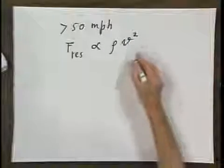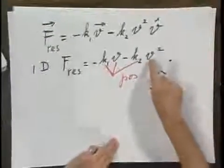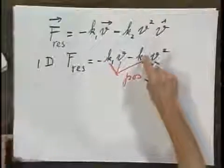And also the speed squared. It is this term that dominates, and K2 holds, among other things, the density of the medium.